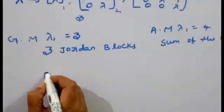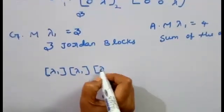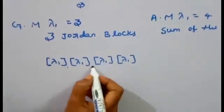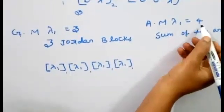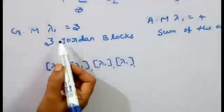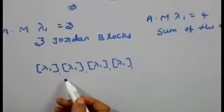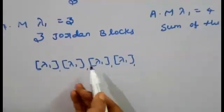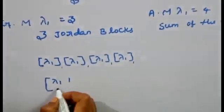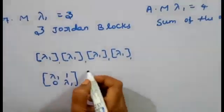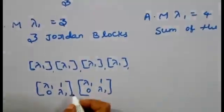We assume λ1 has one Jordan block of order 2: [λ1, 1; 0, λ1]. The sum of orders must equal the algebraic multiplicity of 4. With three Jordan blocks whose orders sum to 4, we can choose one block of order 2 and two blocks of order 1. The sum becomes 2 + 1 + 1 = 4, which equals the algebraic multiplicity.